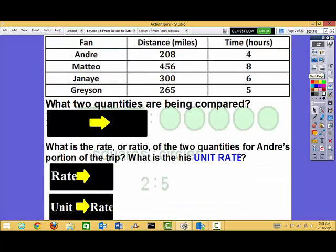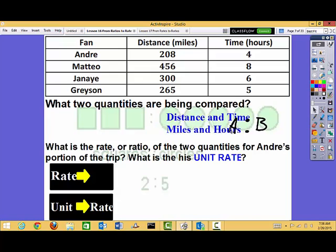Janaye drove 300 miles in six hours. Grayson drove 265, and that took him five hours. Let's go to our first problem. What two quantities are being compared? So ratio, remember, is a comparison of two things. One thing compared to another. So what two things are we comparing here? Well, we are comparing distance and time. If I look at my chart, I have distance and time, or we could say it's miles and hours. Either one is correct.